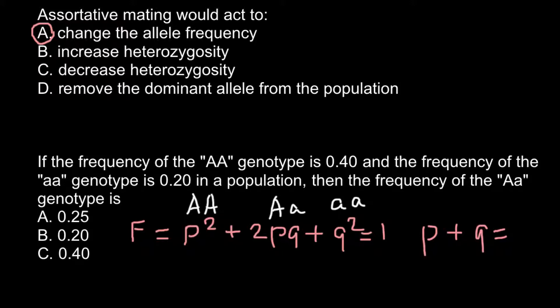If we add them up, p stands for all the alleles that are dominant A, and q for all the recessive alleles. So once again, if we add them up, we are going to get 1.